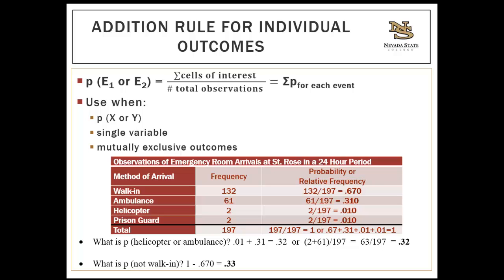You can find this two ways: add the probabilities for each event — 0.01 (helicopter) plus 0.31 (ambulance) equals 0.32 — or add the frequencies of interest (61 ambulance plus 2 helicopter equals 63) and divide by total patients (197) to still get 0.32. That's a 32% chance the next patient will arrive in a helicopter or ambulance based on this data, though several factors may affect the accuracy of this estimate.